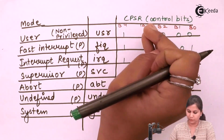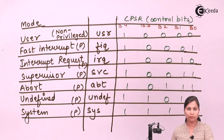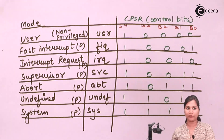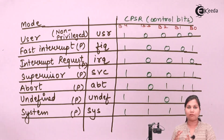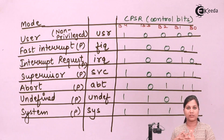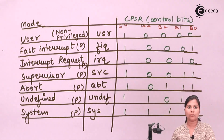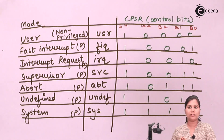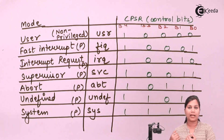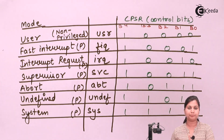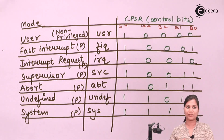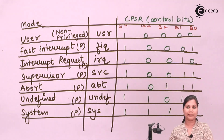These mode selection bits are present in the current program status register. We have seen that there are seven operating modes, out of which one is the non-privileged mode (user mode) and the remaining six are privileged modes. We have studied the function of the processor in all these modes, the speciality of each mode, and how the registers will be available to the programmer.